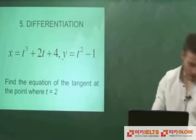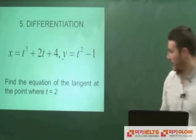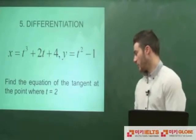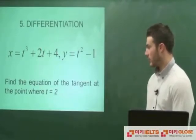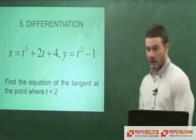So imagine we are asked this question. Find the equation of the tangent at the point where t equals 2, to the curve x equals t cube plus 2t plus 4, y equals t squared minus 1.